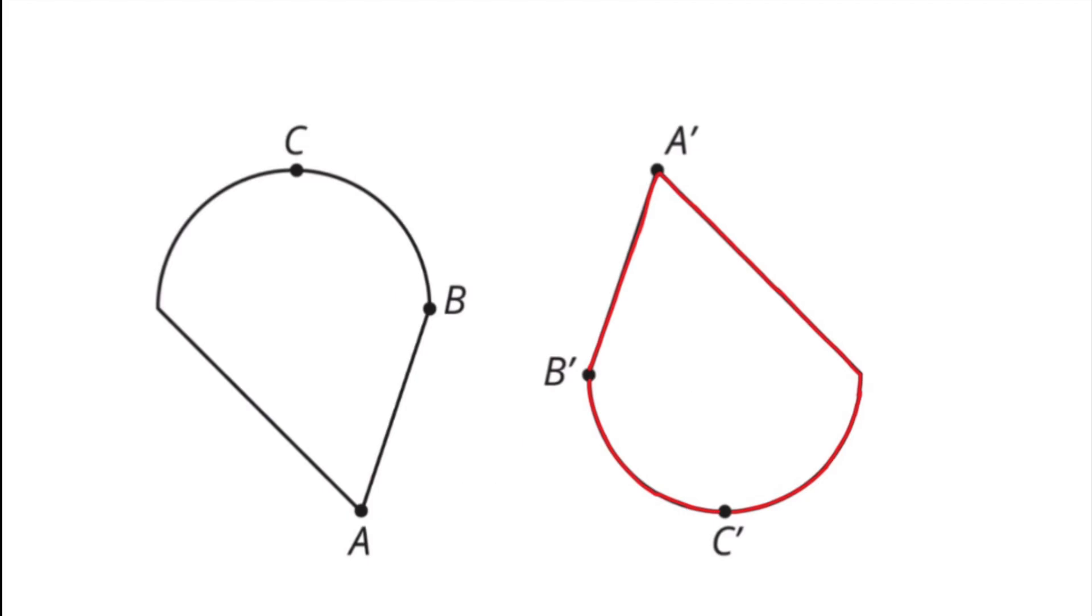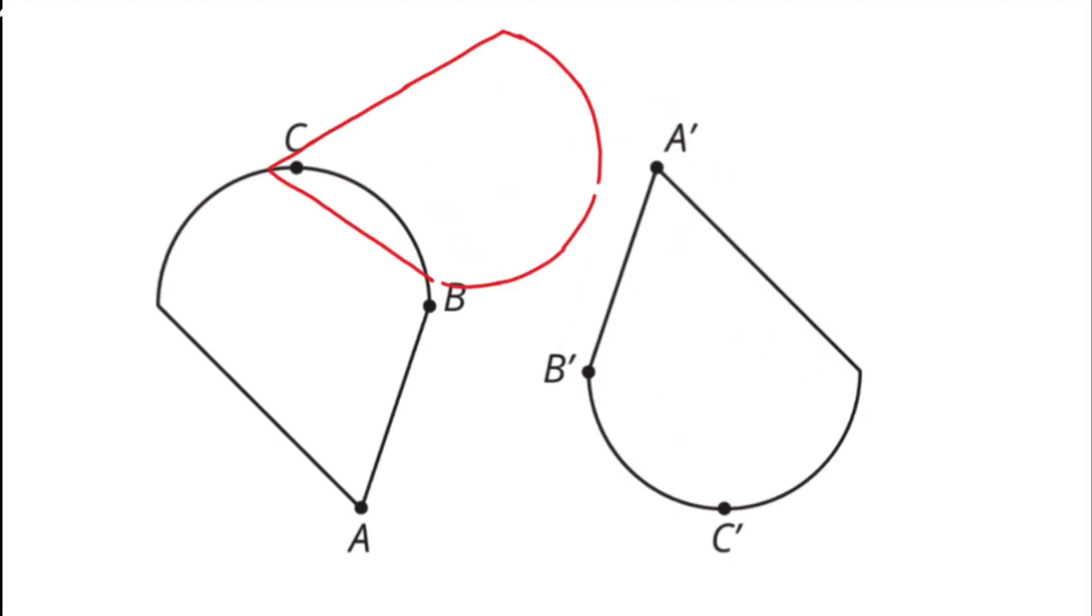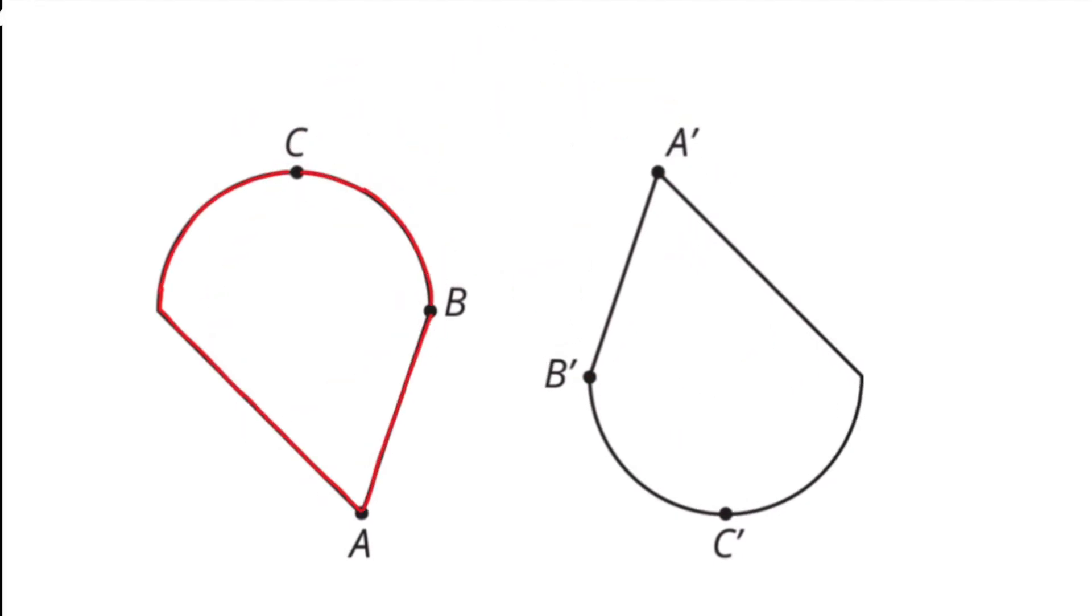I traced over the second congruent figure, leaving A', B', and C' identified with tiny gaps in the tracing. And those tiny gaps in the tracing line up perfectly with angles A, B, and C. So angles ABC and A'B'C' are congruent.